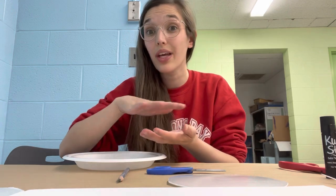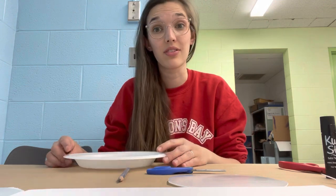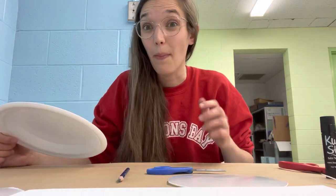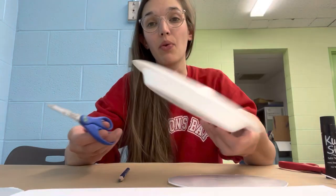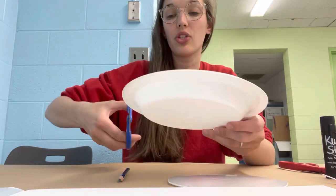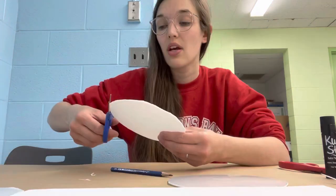I know it's called a styrofoam plate, but when you're printmaking, anything that you're using to put your image on is called a plate. If you want to get fancy, it's your printing matrix. What you're gonna do is take the plate and prepare it by cutting off this ridge.